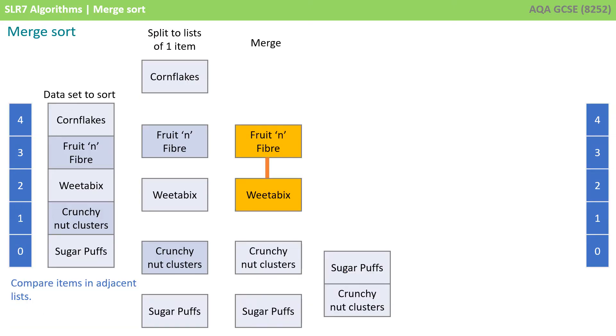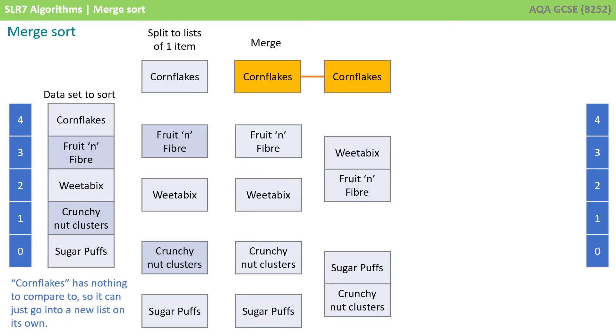We repeat the process, and we compare items in adjacent lists. Fruit and fibre comes first, so we put it into a new merged list, followed by Weetabix. Cornflakes has nothing to compare to, so it can just go into a new list on its own.